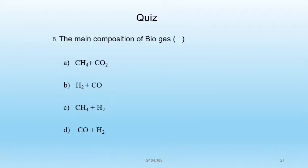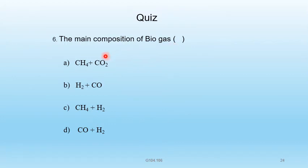Question 10 — The main composition of biogas is: A) CH4 + CO2, B) H2 + CO, C) CH4 + H2, D) CO + H2. The main composition of biogas is methane and carbon dioxide. A is the correct answer.